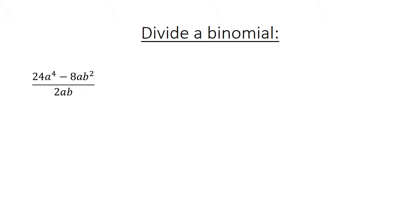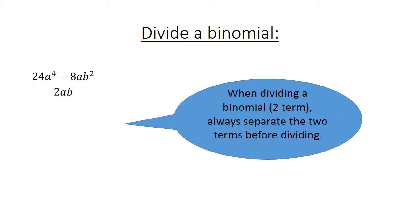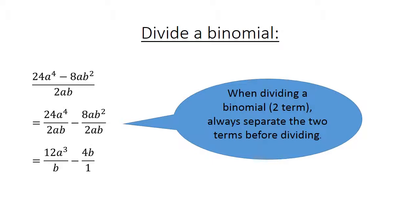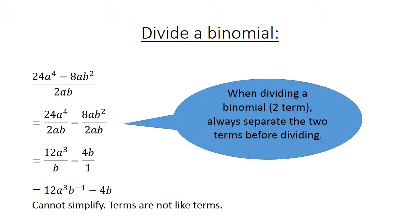Another example: 24x to the power of 4 minus 8x to the power of 2 divided by 2x. When dividing a binomial, always separate the two terms before dividing. Divide each term by 2x separately to simplify. Again we cannot simplify further — the terms are not like terms.